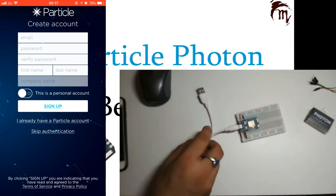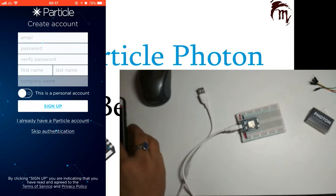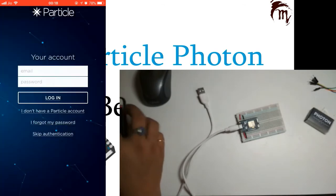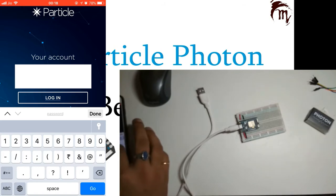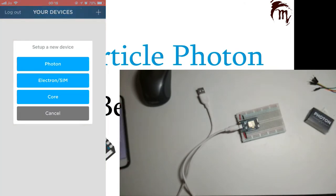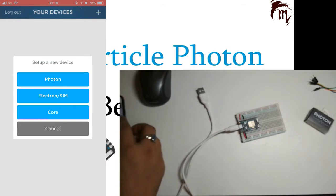Now you need to click on Get Connected. Since I already have a Particle account, I will click on I already have a Particle account. If you are setting it up for the first time, you need to sign up with an email ID and create your account. I will enter my email credentials and provide my password, then log into it.